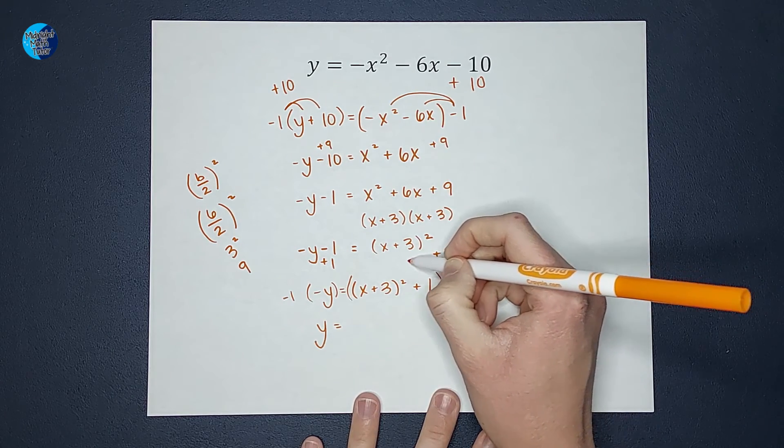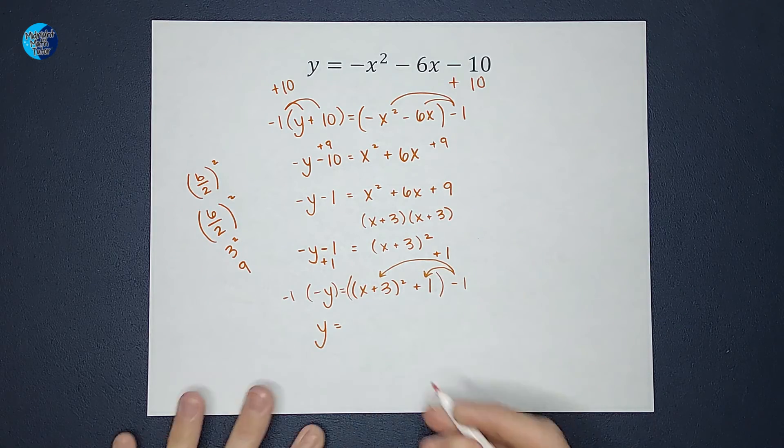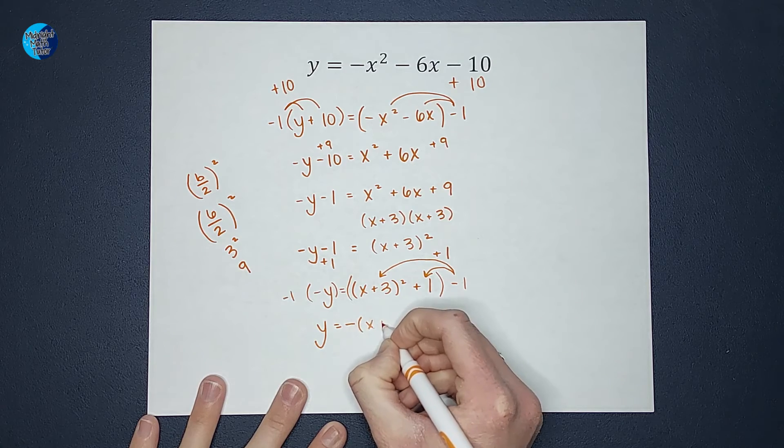And then this negative 1 is going to be distributed to both of these. And I'm going to have the negative out front, negative x plus 3 squared.